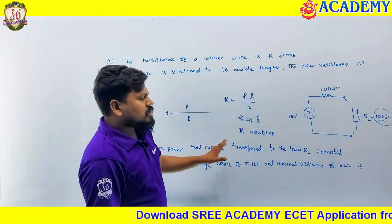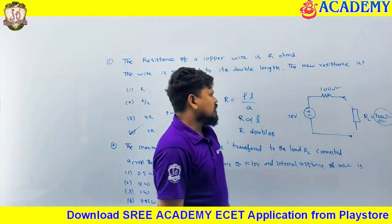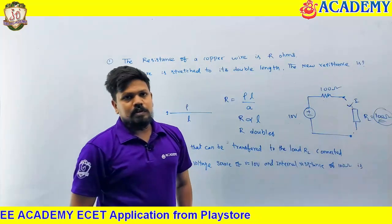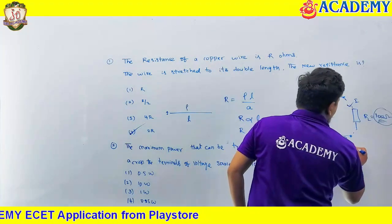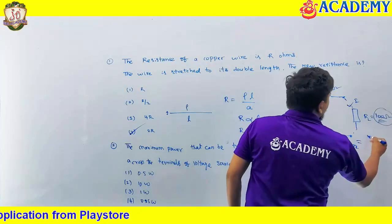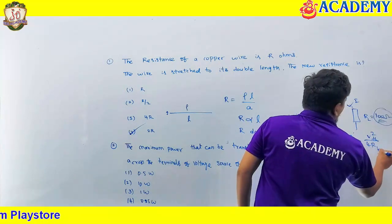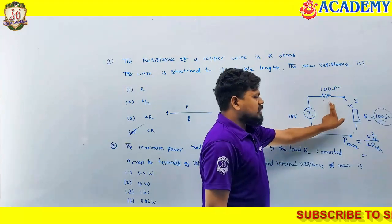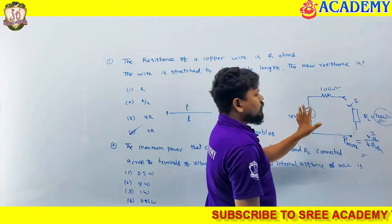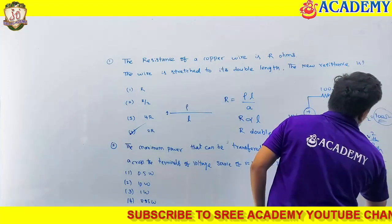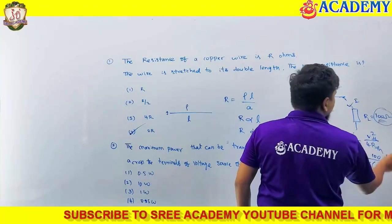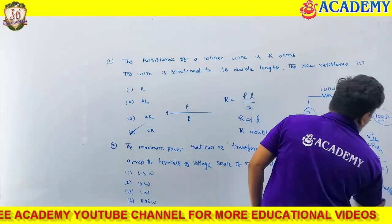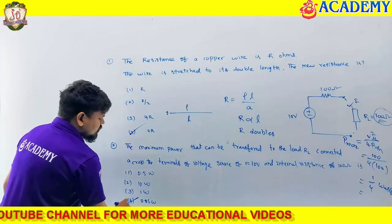In this question they are not asking the resistance value — they are asking the maximum power transfer. So directly calculate the current, voltage into current, or I squared into R. Directly using the formula: P max equals Vth squared divided by 4Rth. V is nothing but the Thevenin's voltage, which is 10 volts. So 10 squared is 100, divided by 4 into 100, equals 1/4 watts, that is 0.25 watts. That is the answer.